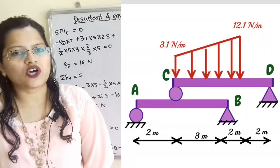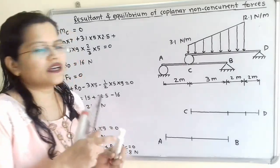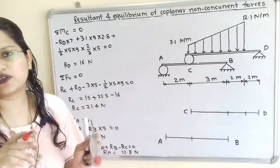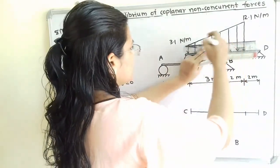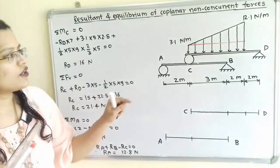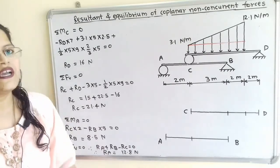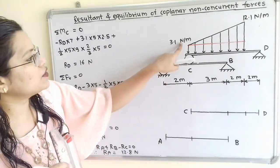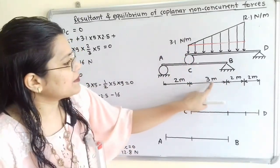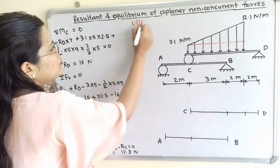We will first draw the free body diagram for this given system. We will make a construction by drawing a horizontal line passing through the 3.1 N/m load. The load below this red line is known as the uniformly distributed load, and I will write here: uniformly distributed load.